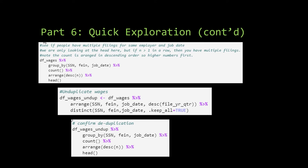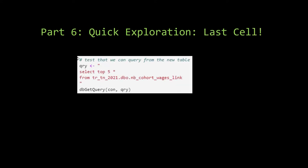In the fourth cell of Part 6, we tackle the duplication problem. When we run this cell, the total number of jobs is somewhat reduced from that in the first cell, but certainly not by much. In the next cell — the second to last in Section 6 — we look at the head of the unduplicated wage data frame and see that the duplicates that appeared prior to deduplication are gone. This is additional confirmation that our deduplication worked. In the very last code cell of Part 6, Quick Exploration, we do a simple select to see if we can query our new linked cohort wages table. When you run the cell, did you get a result or did you get an error?